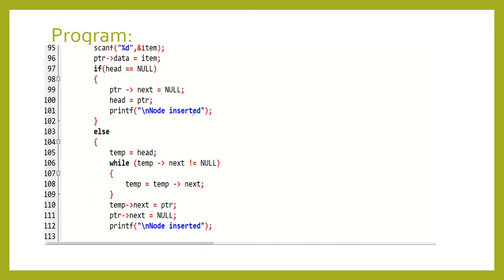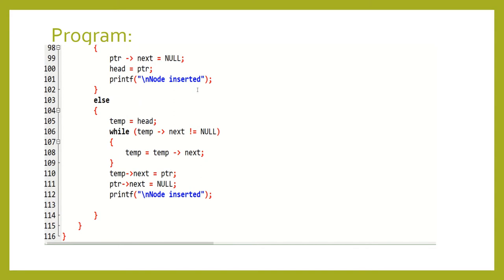If the list is not empty, it jumps to the else statement. A temporary variable 'temp' is used and equated to head to find the address. While 'temp->next' is not equal to null, 'temp = temp->next'. If it is not null, the address value stored in temp moves forward. Then 'temp->next = ptr' and 'ptr->next = null', so the last node contains null in its address field, and insertion is successful.